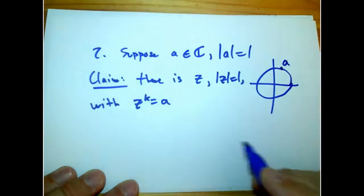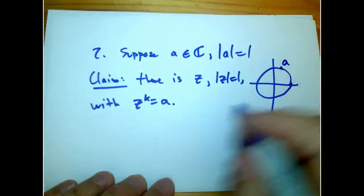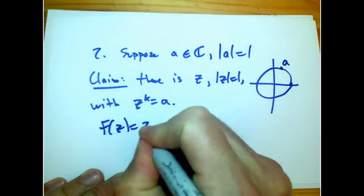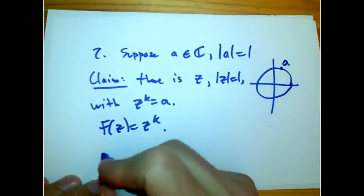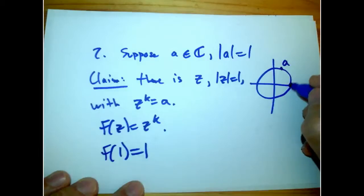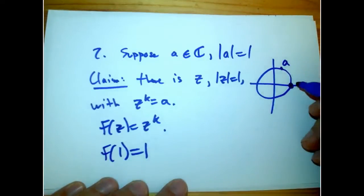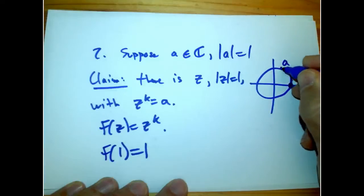I'm not going to be super careful about this, but it's basically IVT again, but just applied to the circle. Because let's take a look at f(z) equals z^k. Then, f(1) is 1. So it starts here.